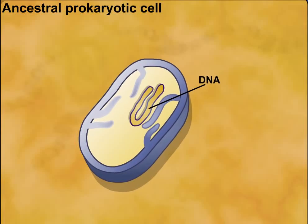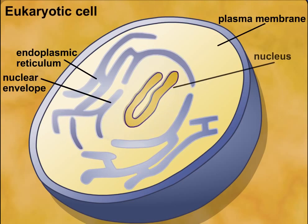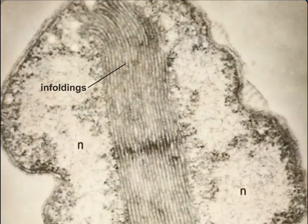The eukaryotic internal membrane system called the endoplasmic reticulum and the nuclear envelope may have evolved from infoldings of the plasma membrane in an ancestral prokaryotic cell. Such infoldings are common in modern prokaryotic cells.